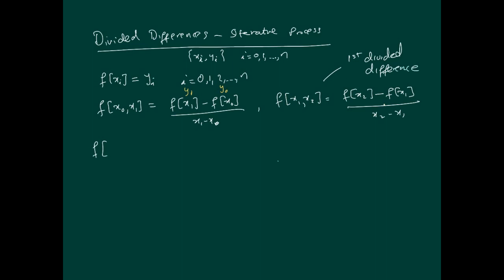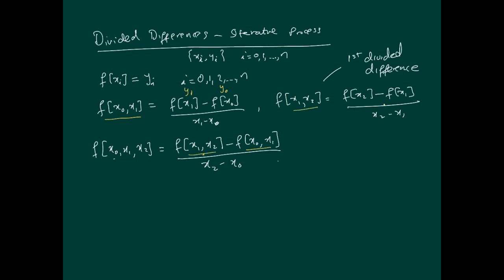The original values are just the data points, the next is the first divided difference, and the second divided difference takes into account three points. For example, f[x0, x1, x2] equals f[x1, x2] minus f[x0, x1], divided by x2 minus x0. An easy way to see this: ignore the first index to get f[x1, x2], then ignore the last to get f[x0, x1].